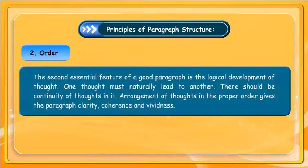The second essential feature of a good paragraph is Order — the logical development of thought. One thought must naturally lead to another. There should be continuity of thoughts. Arrangement of thoughts in the proper order gives the paragraph clarity, coherence, and vividness.